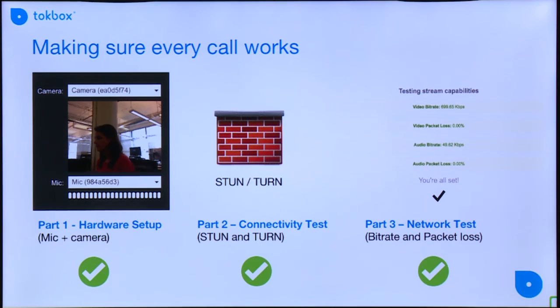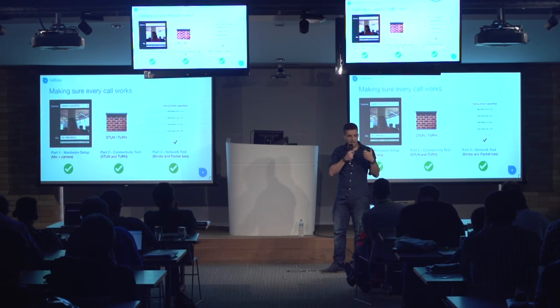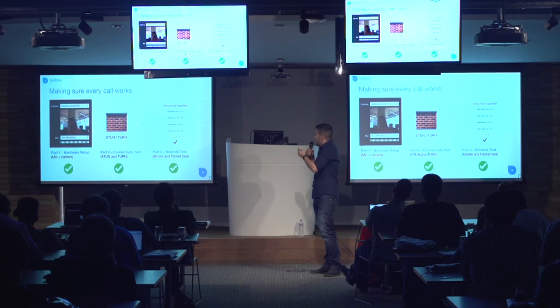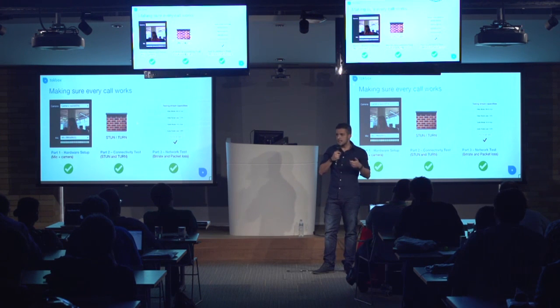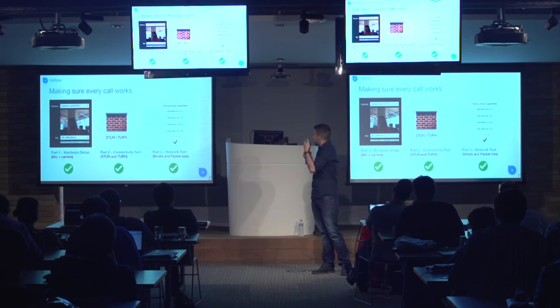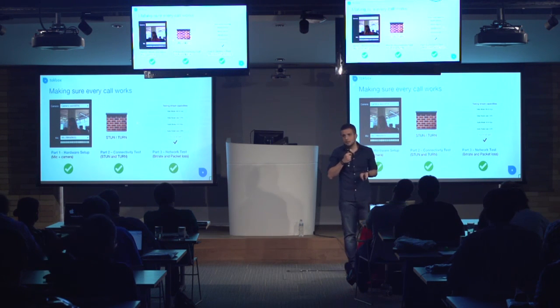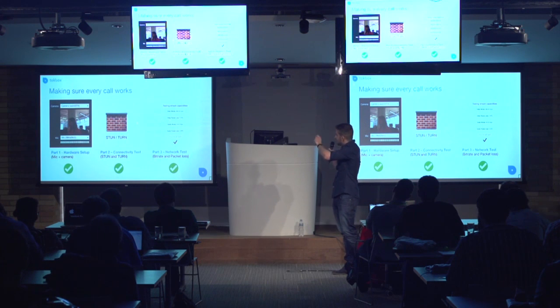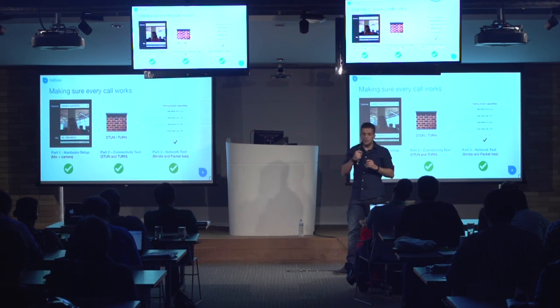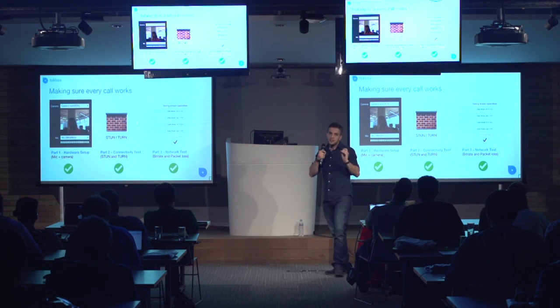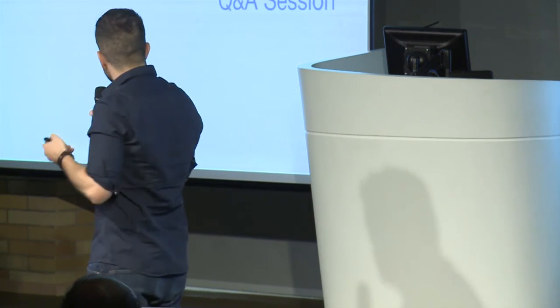Just to recap, we have basically three parts. The first one is hardware setup, where we test camera and microphone. Then the connectivity test to our STUN and TURN servers. And last, the network test to test bitrate and packet loss. Once you test everything and all checks pass, you can be sure — or almost sure — that every call will work. Thanks.